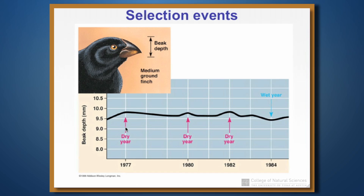In 1977 there was a dry year and beak depth increased, followed by a series of wet years where it decreased. Then there was another drought in 1980 which increased beak depth, and it rapidly went back down. In 1982 there was another dry year and beak depth increased again. There was also a rare extremely wet year that selected for smaller beak depth than what is routinely seen on the island. These are quantitative traits that have changed under selective pressure.